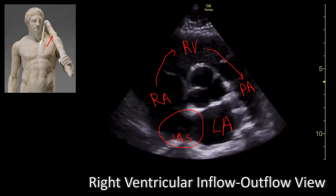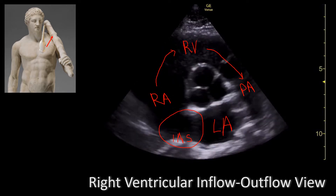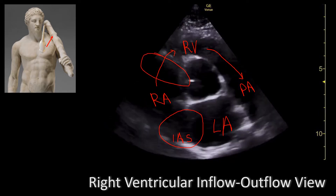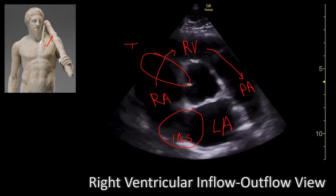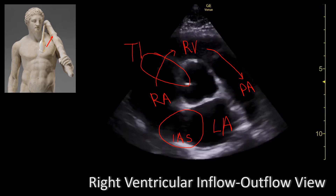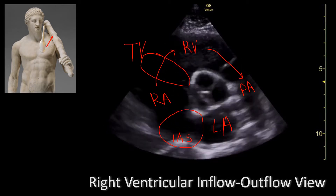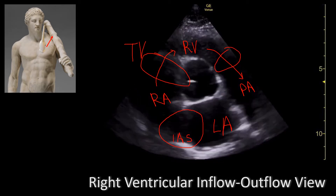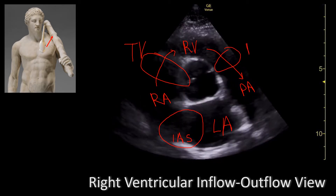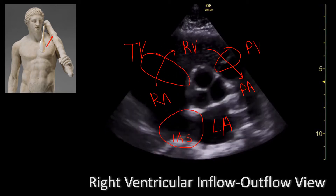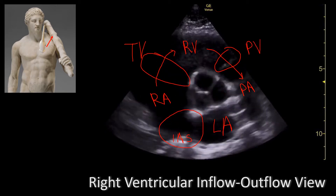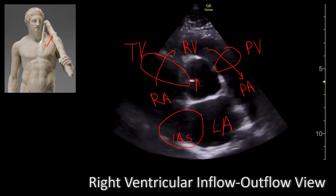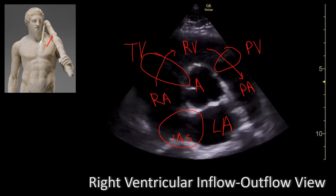Let's talk about the valves we're looking at. Between the right atrium and the right ventricle you have the tricuspid valve. And between the right ventricle and the pulmonary artery you have the pulmonic valve. The valve that's right in the middle of the screen is going to be the aortic valve in short axis view.